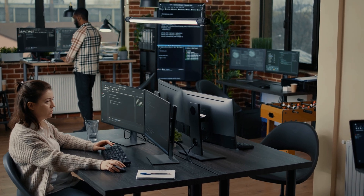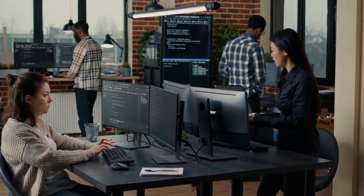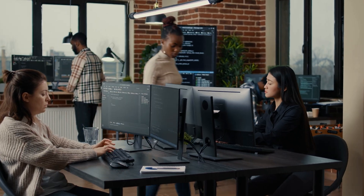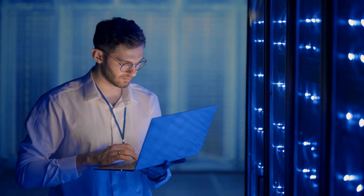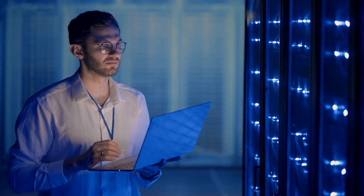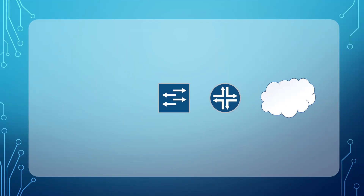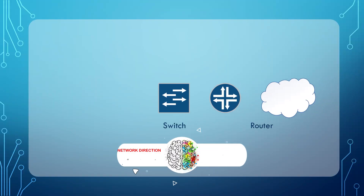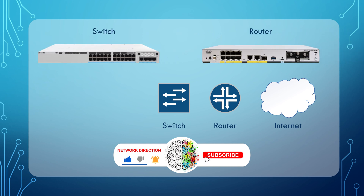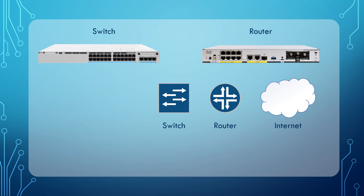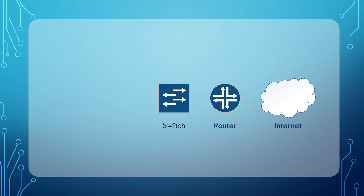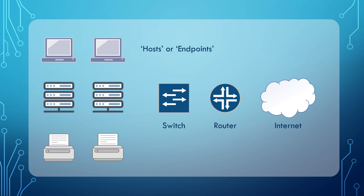As we discussed previously, networks are used to connect devices together so they can share information and communicate with one another. These devices often need some sort of special networking equipment to connect them all together and to help direct the flow of traffic. Common types of network equipment include switches and routers, and we'll talk in much more detail about how they work in future videos. The devices that connect to our networking equipment are usually called endpoints or hosts. These include computers, servers, printers, and things like these.